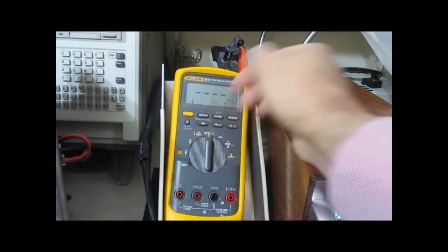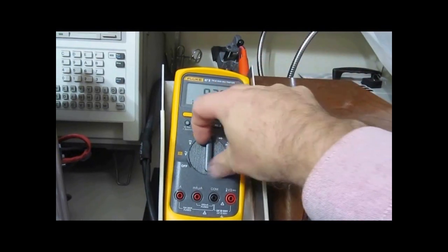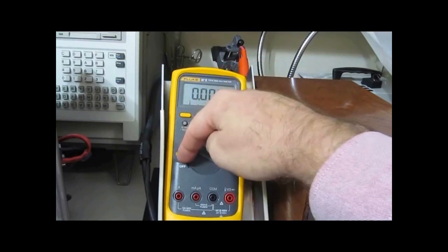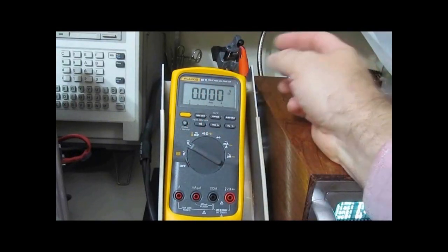So millivolt, ohms, capacitance, and diode check are all damaged on this meter. DC volts and AC volts appear to be fine.